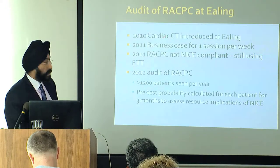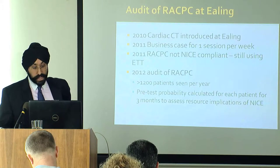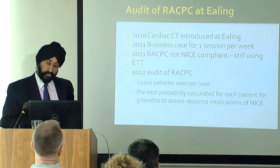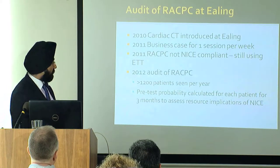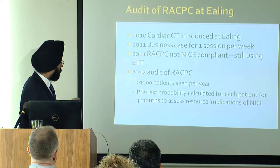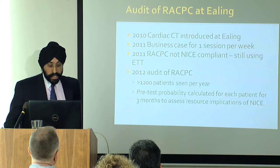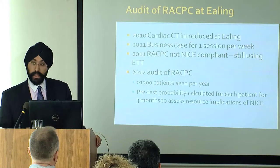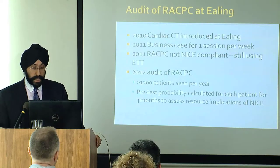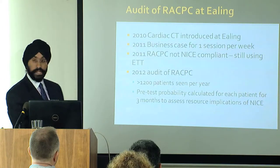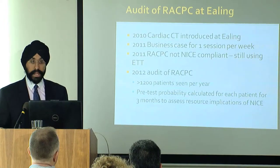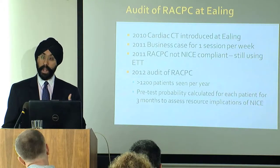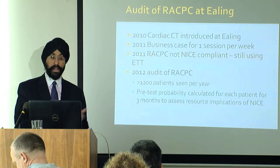Just last year, we decided to audit the chest pain clinic and look at what we would need to do to become NICE-compliant. We see about 1,200 patients a year, so we're a very busy chest pain clinic. We did a three-month audit to look at the pretest probability stratification of our patients. The results: very low risk (less than 10%) was 10% of patients; low to intermediate was 30%; intermediate was 40%; and higher pretest probability (over 60%) was 20% of our patients.